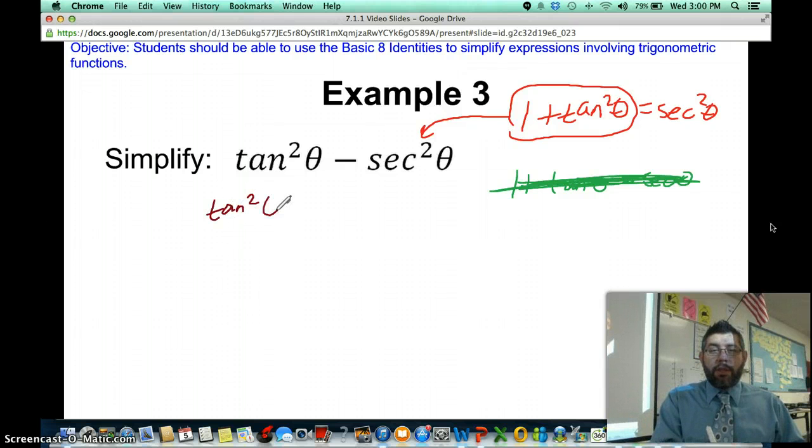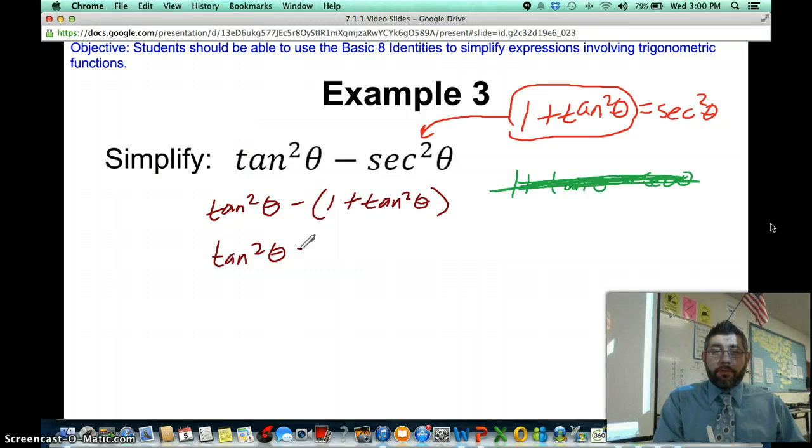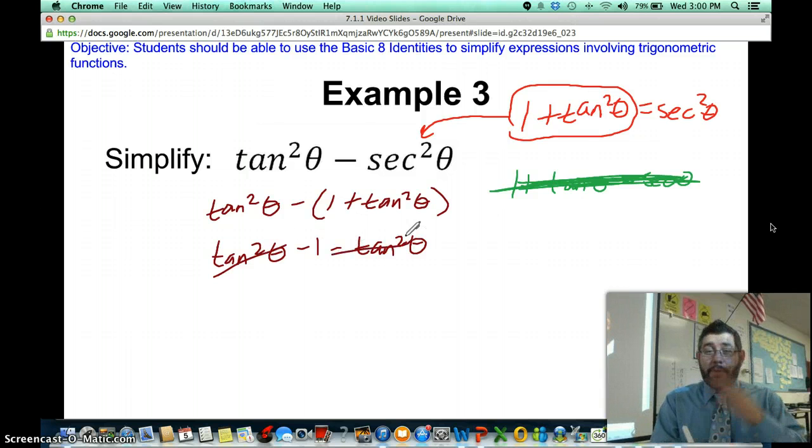Tangent squared theta minus, we're going to substitute in. Got to put the parentheses here. Don't want to mess that distribution up. Now I'm going to distribute the negative. And then look at that. Tangent squared, this can cancel out, right? It's a plus and a minus. I'm left with negative 1. Done. That's it. Simplified. That's all it's simplified.